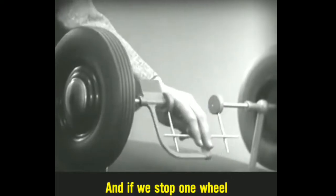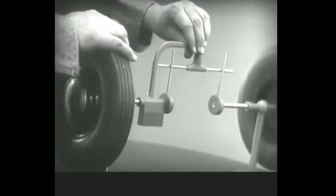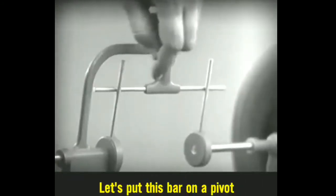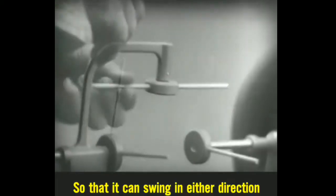And, if we stop one wheel, the other wheel won't budge. Let's put this bar on a pivot so that it can swing in either direction.